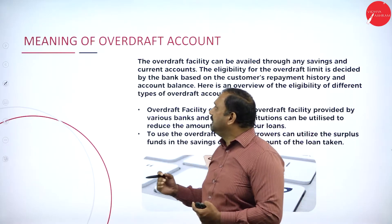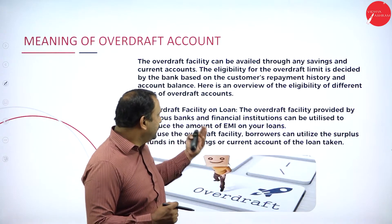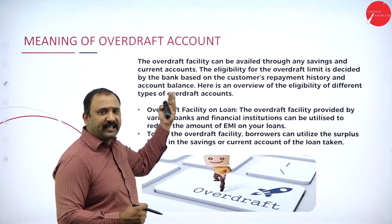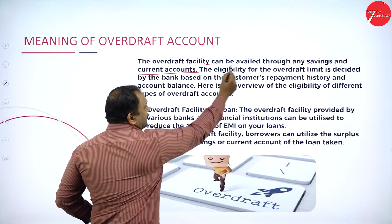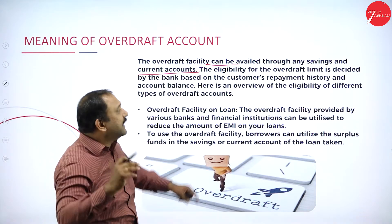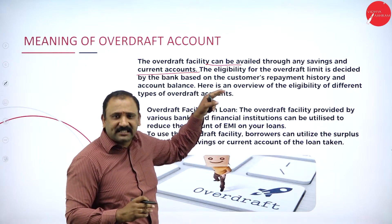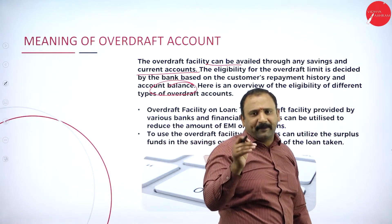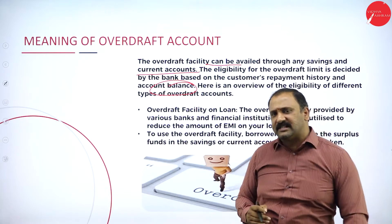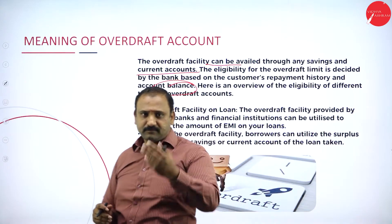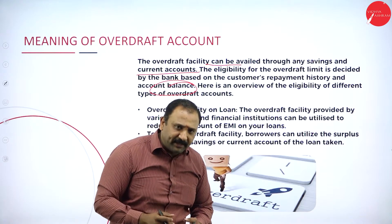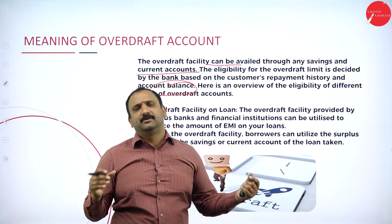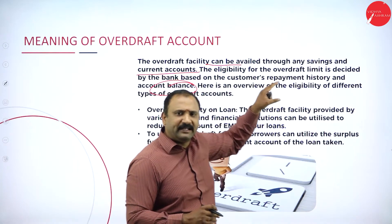The overdraft account can be operated through any savings or current account. Eligibility for an overdraft limit is based on the customer's repayment history and account balance. Every banker has a history of your savings and current account, and they assess what sort of balance you have maintained, what history you have with the bank, and how quickly you repay. All these factors are counted when deciding the overdraft eligibility.